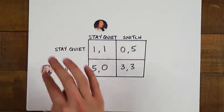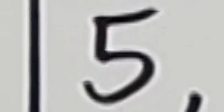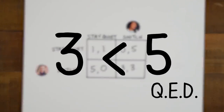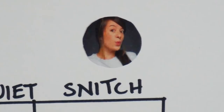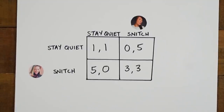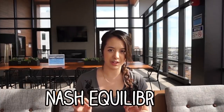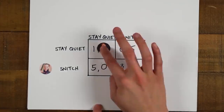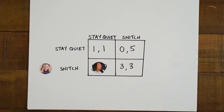If you stay quiet, Diana might snitch on you and then you'd go to jail for five years. If she stays quiet and you snitch on her, you have a chance of getting zero jail time, or going away for three years if she snitches too. Three years is better than five, so the safest thing for you to do is snitch. And it's exactly the same for Diana. Basically no matter what the other player is doing, you're rewarded for snitching. This point is called the Nash equilibrium, discovered by John Nash who won the Nobel Prize in economics for this very idea. The Nash equilibrium is the point where neither player has any incentive to change their decision. So the smartest thing for you to do is snitch.